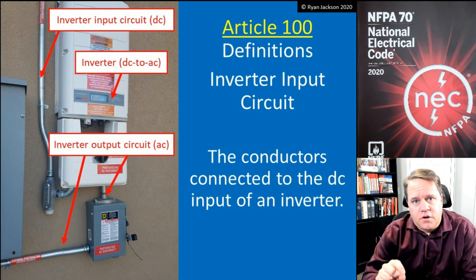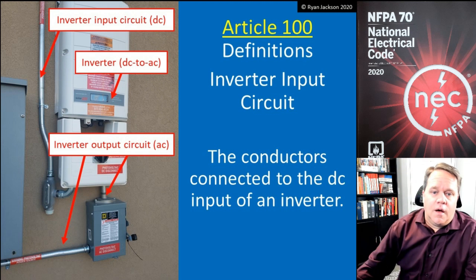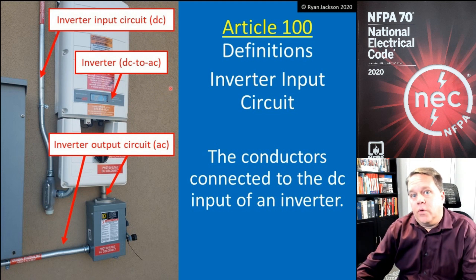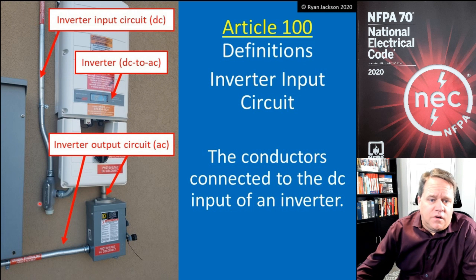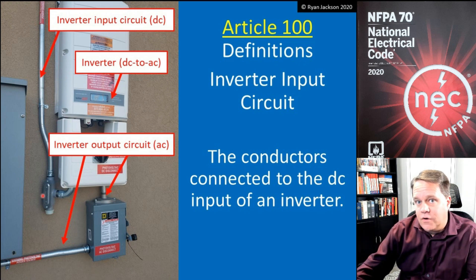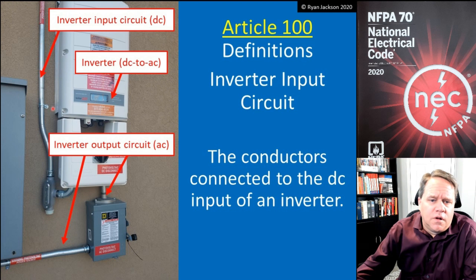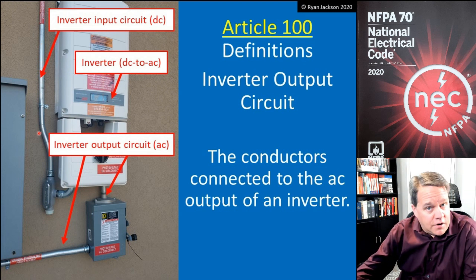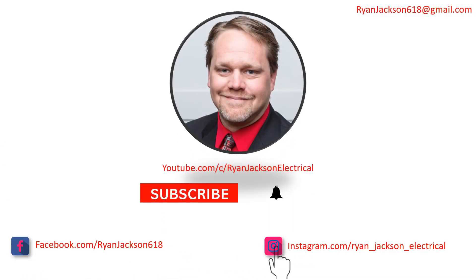We also have inverter input circuits and inverter output circuits, which are exactly what they sound like. An inverter input circuit consists of the conductors connected to the DC input of an inverter — whether it's a micro inverter on the roof or a large inverter installed at the panel. The inverter input is the DC side. The inverter output circuit is the AC side. There's some bi-directional nuance, but that's the core distinction.